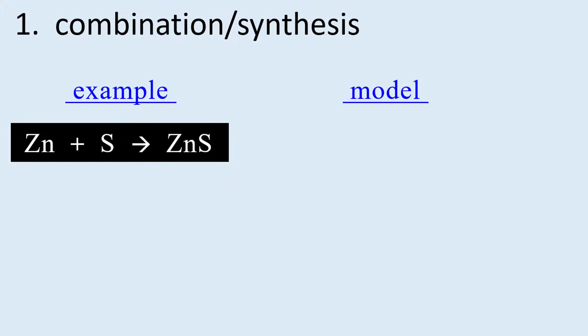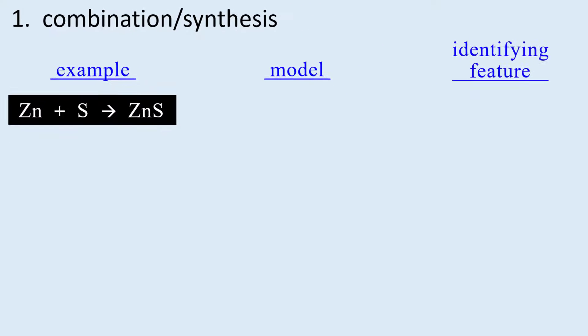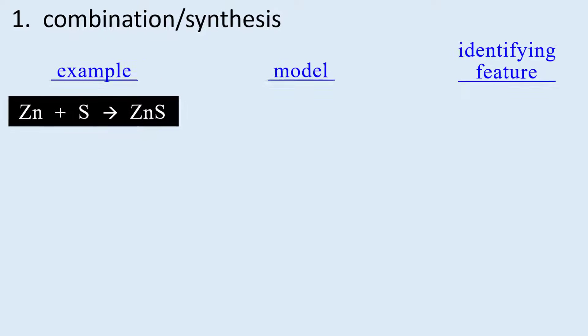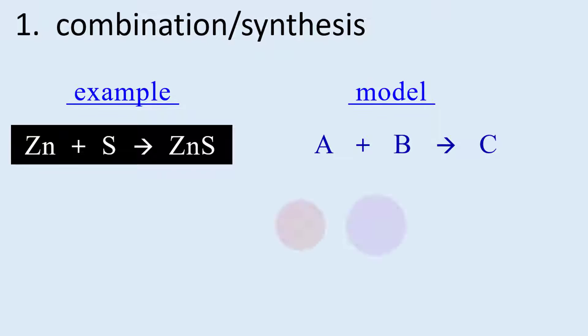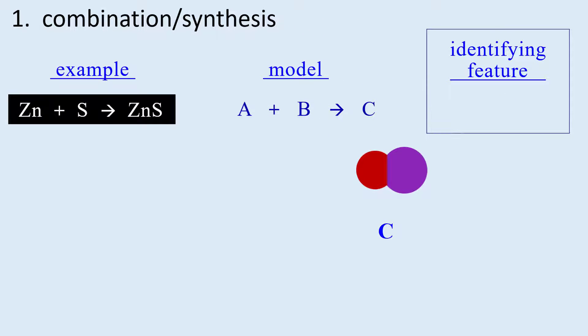For each example we will make a model for the reaction type and importantly find a feature of the chemical equation that tells us the reaction type. For combination, the model is simply two substances represented by A and B combining to produce a single product made up of A and B which is represented by C. Very importantly, we can identify combination reactions as having a single product.